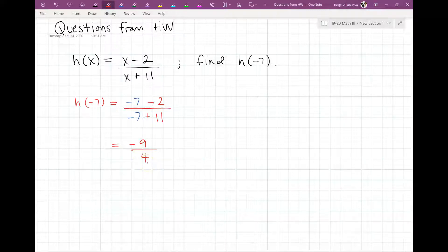So there's your answer, -9/4. Right, -7 minus 2 is -9, and 11 minus 7 would be 4.